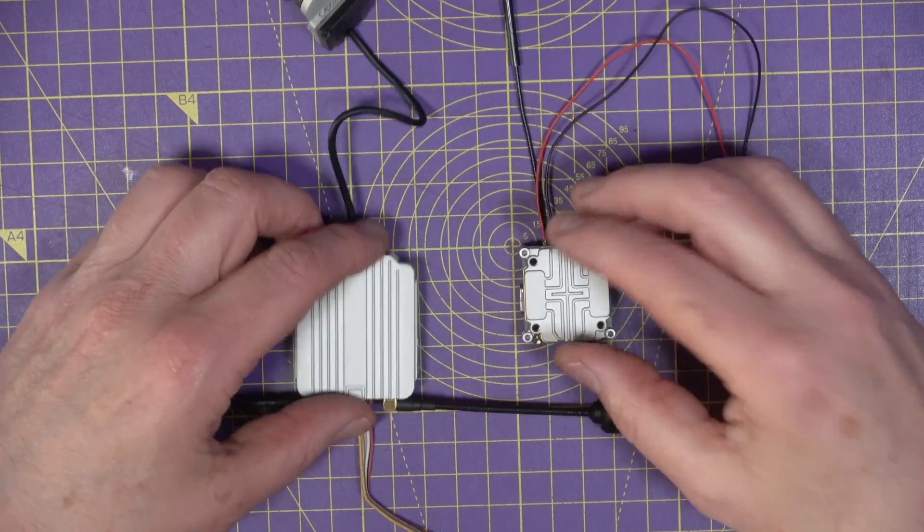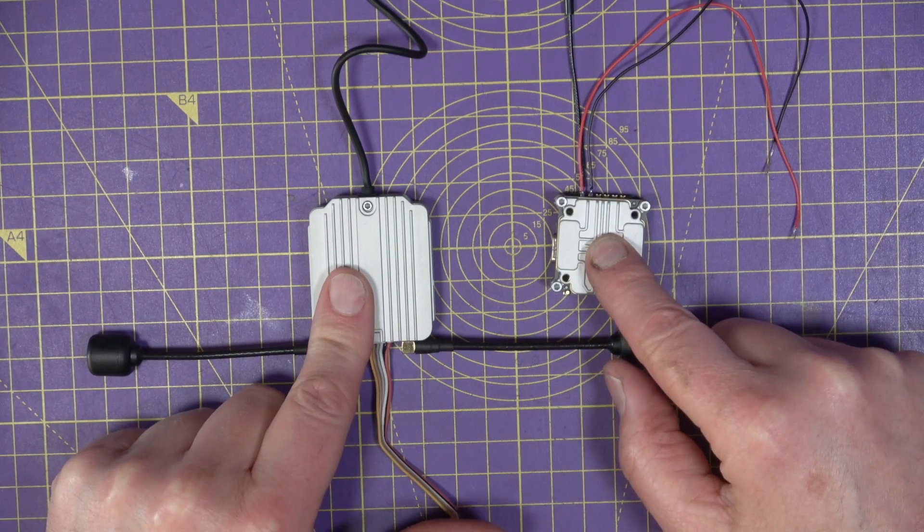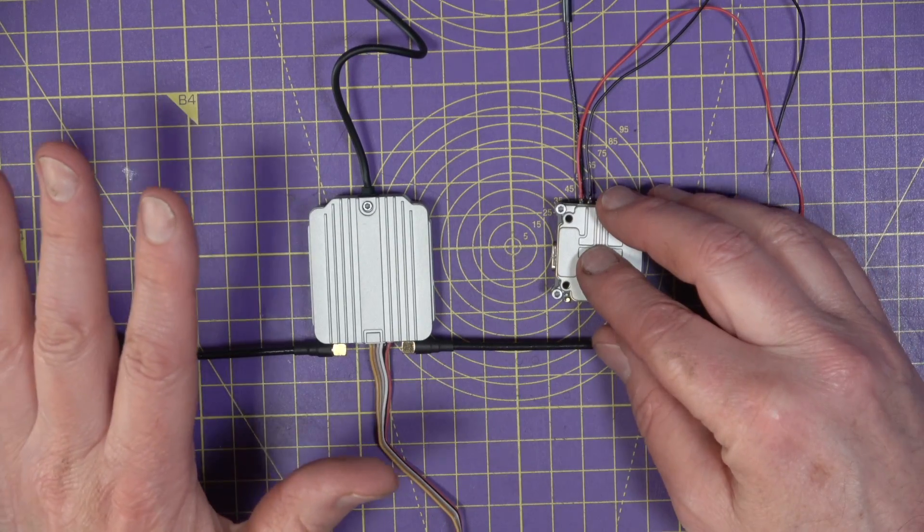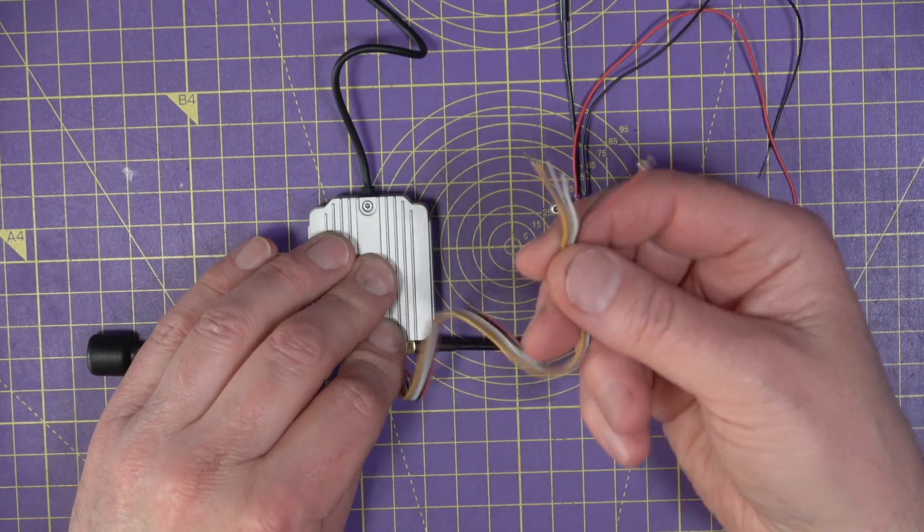To activate or upgrade the firmware on a Caddx Vista or a DJI air unit, you don't need it connected to a quad, you don't need it connected to a flight controller. All you need to do is supply power and connect it to your PC.